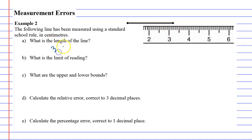Question B: what is the limit of reading? A limit of reading is the smallest unit this thing can measure, and the smallest it can measure is 0.1 centimeters, or what's also known as one millimeter.